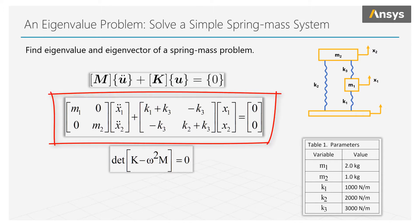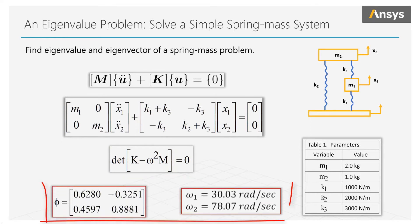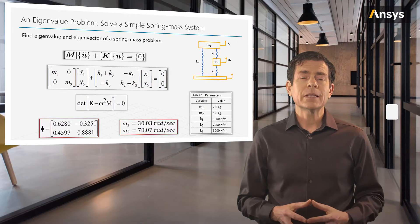We then solve for the determinant which can be done by hand, a scientific calculator, or more commonly, a computer. Finally, we have the angular frequencies omega and the eigenvectors or mode shapes phi. Recall that we typically have one last step, and that is to compute the natural frequencies from the angular frequencies.